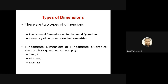Secondary dimensions, or derived quantities, are quantities which possess more than one fundamental dimension. For example, velocity is denoted by distance per unit of time, so it may have a combination of L and T, or a combination of M and L alone. That is why these are called secondary dimensions — they can be derived with the help of fundamental dimensions.